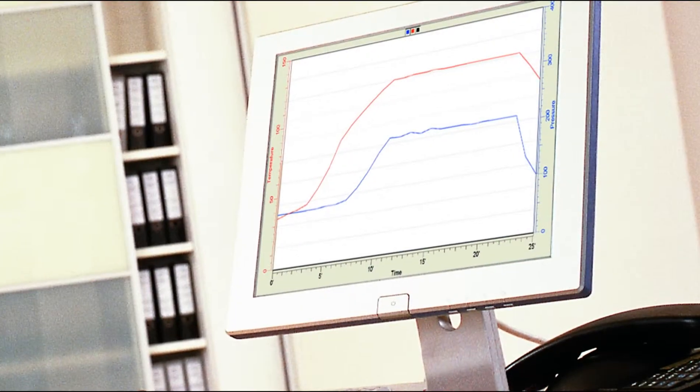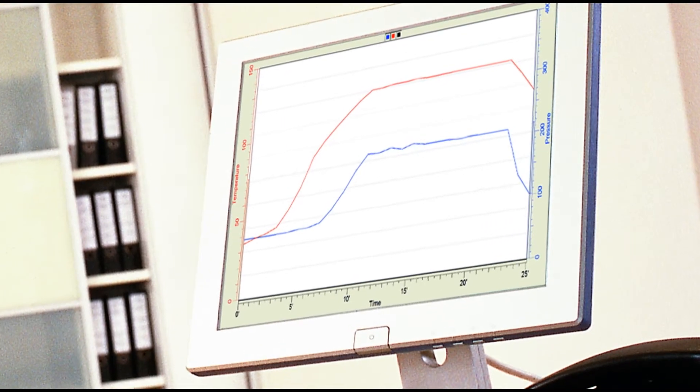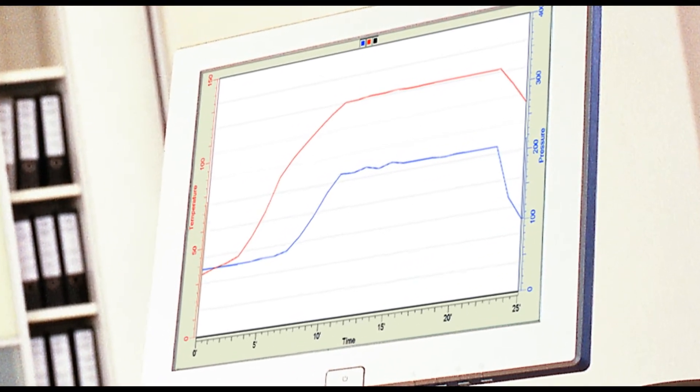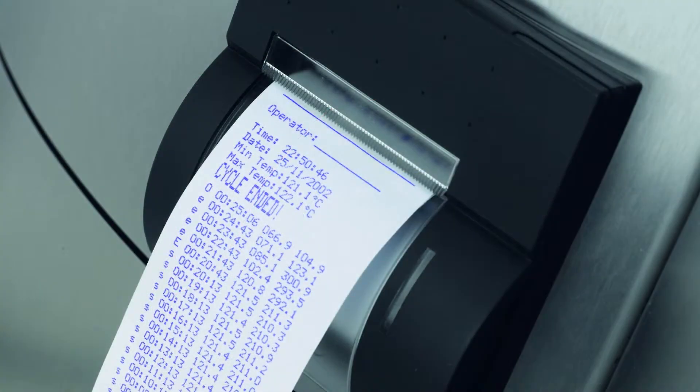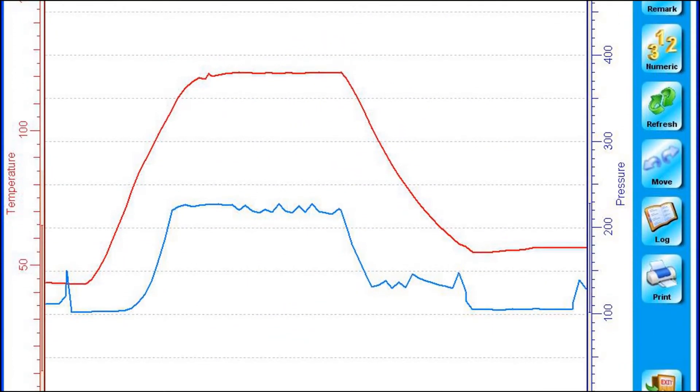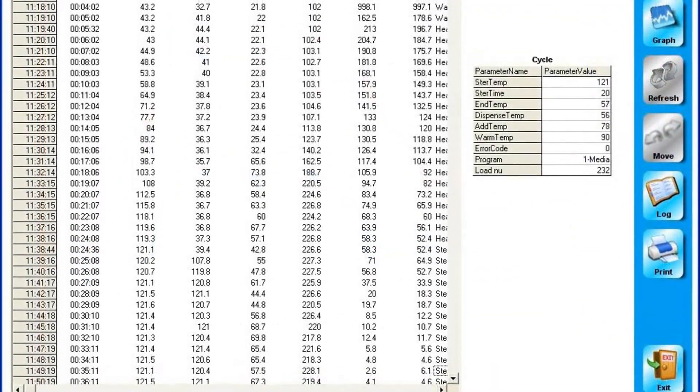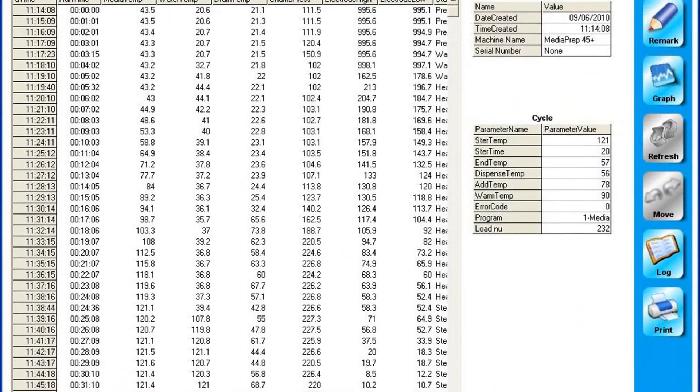For quality control and documentation purposes, cycle information can be recorded via ticket printer or via PC. Information on temperature, time, and pressure can be stored with each cycle run. This information can be displayed in either graphical or numerical formats.